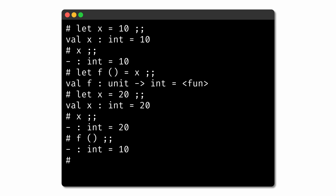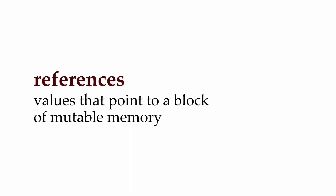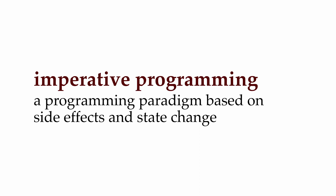If we want to allow for mutable data, OCaml enables this via references. This construct allows us to reference blocks of mutable memory, giving us the ability to change what's stored in those blocks of memory. In doing so, OCaml is allowing us to work in the imperative programming paradigm, which is all about programming based on side effects and state change.